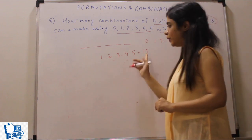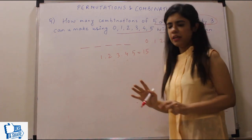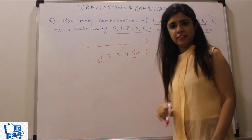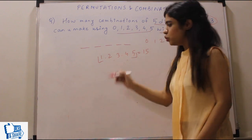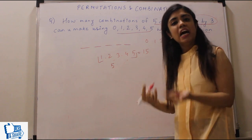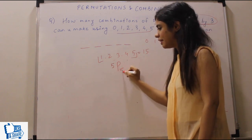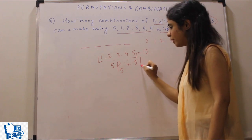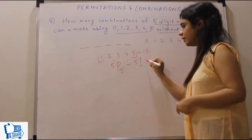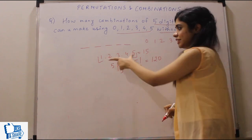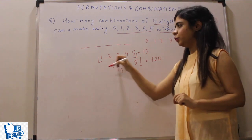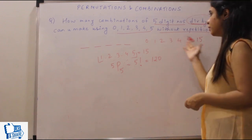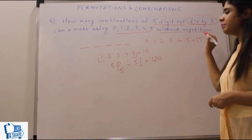We have selected the digits 1, 2, 3, 4, 5, and we have to arrange all of them in five positions. Five numbers in five positions can be arranged in 5P5 ways, which equals 5! = 120. So this is one possibility, but we could choose different digit combinations too.